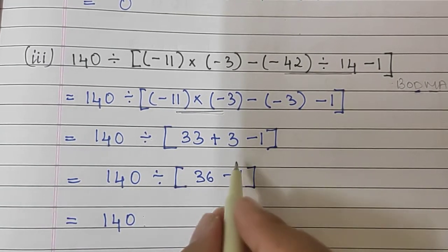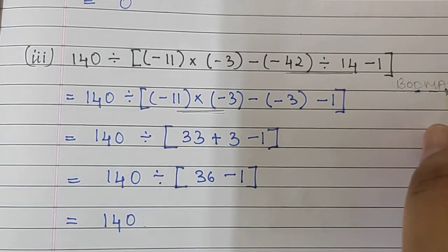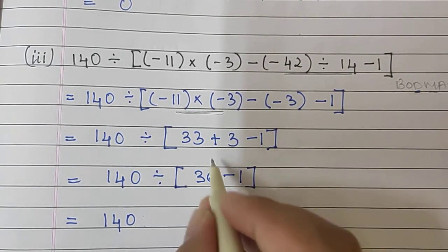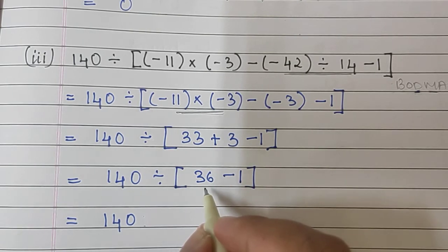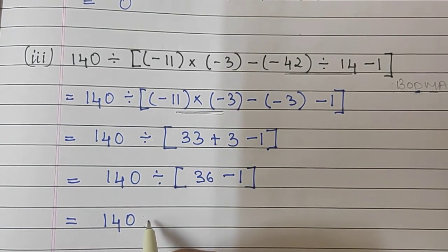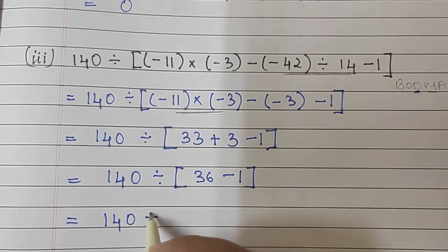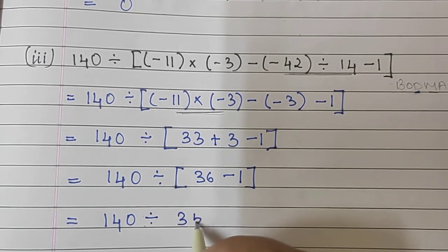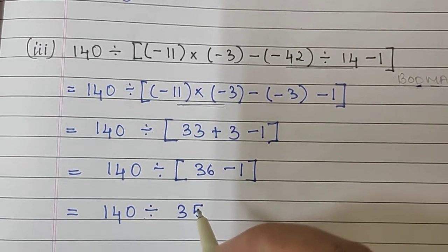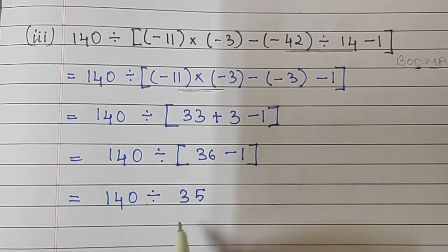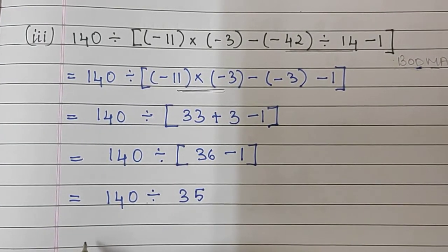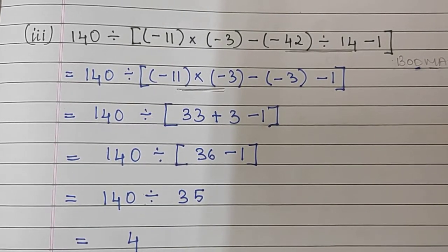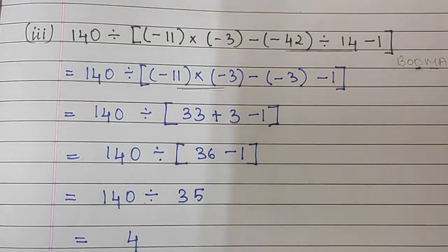140 divided by... According to the BODMAS rule, Addition comes before Subtraction, so we add first. 36 minus 1 is 35. And 140 divided by 35 is 4. So our answer here is 4.